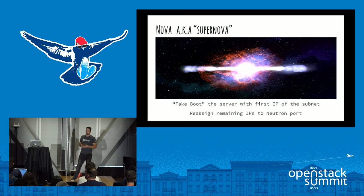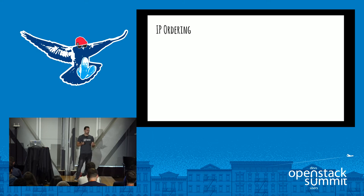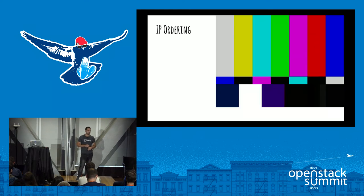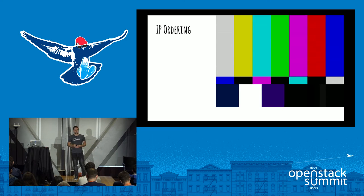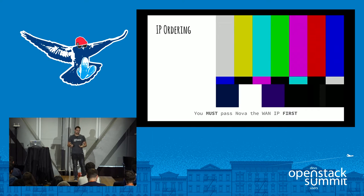IP ordering matters — we discovered this by pure luck. We were testing with test servers in production, and once we succeeded we said, 'Now we can manage the server with OpenStack, let's reimage it.' We completely lost access to the server. What happened: cloud-init takes the first IP you pass to Nova and tries to set it as the gateway. It took a private IP instead of the public one and reassigned the gateway to it. The fix was simple: always pass Nova the public IP first. After that, everything was okay.